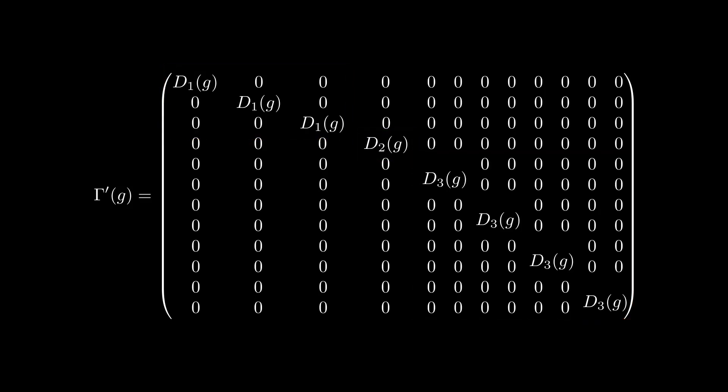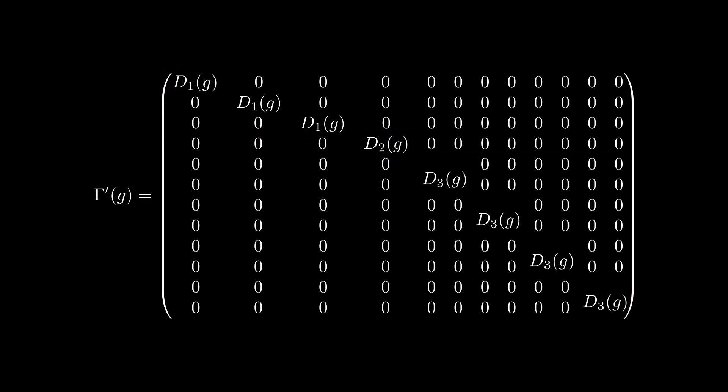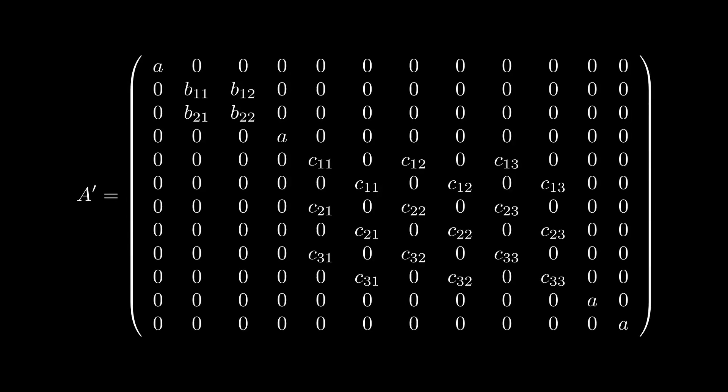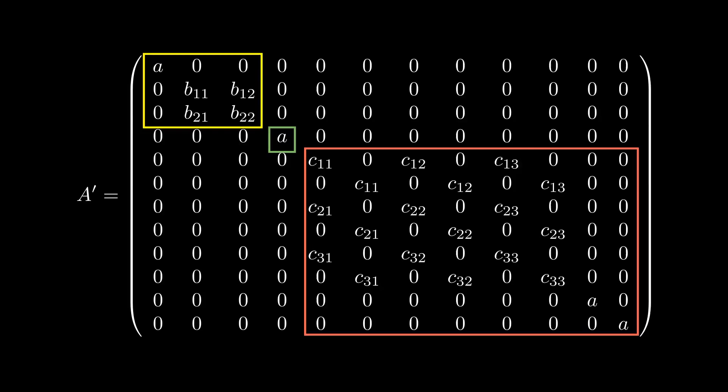Changing the basis of A into the new basis, we obtain a new matrix A' where, to free space, I have defined new variables. As expected by Schor's lemma, the matrix A is block diagonal, with three blocks corresponding to D1, D2, and D3. Since D1 and D3 appear more than one time in the decomposition, their corresponding blocks weren't expected to be diagonal. In general, we would expect 9 1D subblocks in the D1 block, and 16 2D subblocks in the D3 block. In our case, we are happy that some of these subblocks are 0.